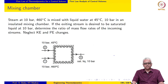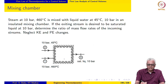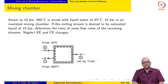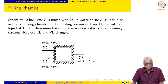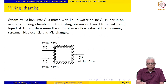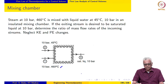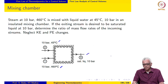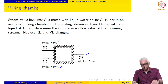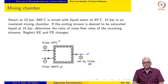The next application we look at is the mixing chamber. A mixing chamber, as the name suggests, mixes different streams and sends out one or more streams at the exit. It may take two or more streams at the inlet. Here we have a mixing chamber where steam at 10 bar, 460 degrees Celsius — which is superheated — comes in, and also liquid water at 45 degrees Celsius and 10 bar. These are mixed together, and we want to adjust the mass flow rates so that saturated liquid at 10 bar exits the mixing chamber.